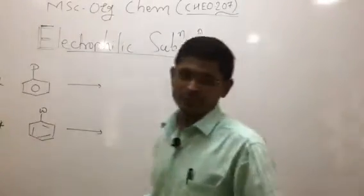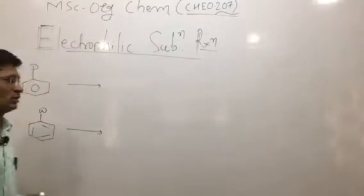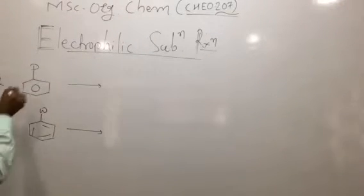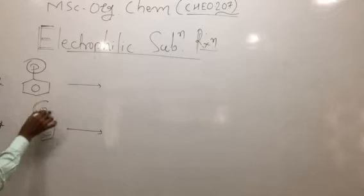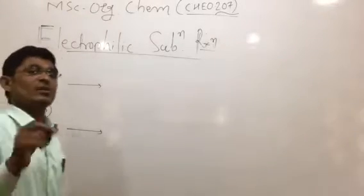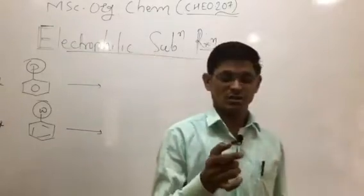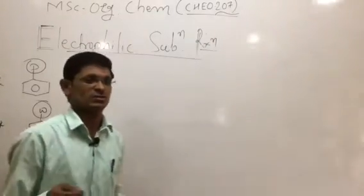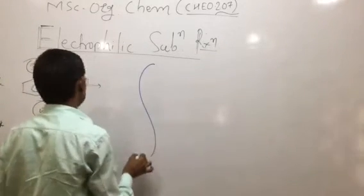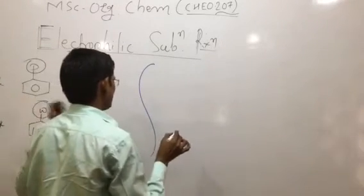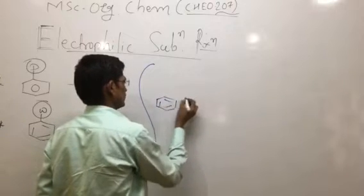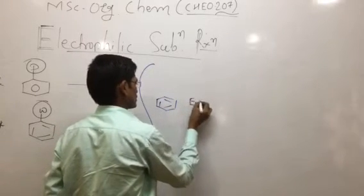Good morning students. In continuation of the previous parts on electrophilic substitution reactions — whenever an electron donating group or electron withdrawing group is present on the benzene nucleus — we are discussing the applications of electrophilic substitution reactions. Before proceeding to any substitution, we consider the aromatic nucleus which undergoes electrophilic substitution reactions.